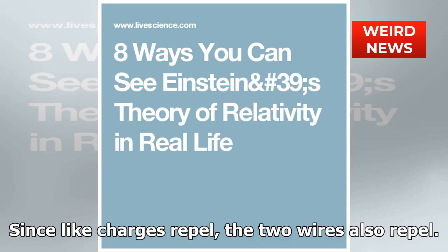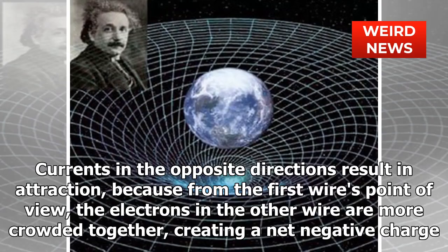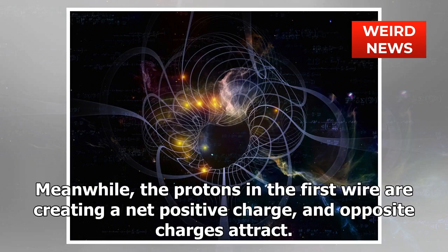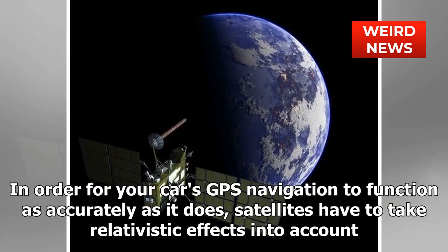Since like charges repel, the two wires also repel when currents move in the same direction. Currents in opposite directions result in attraction because, from the first wire's point of view, the electrons in the other wire are more crowded together, creating a net negative charge, while the protons in the first wire create a net positive charge — and opposite charges attract.